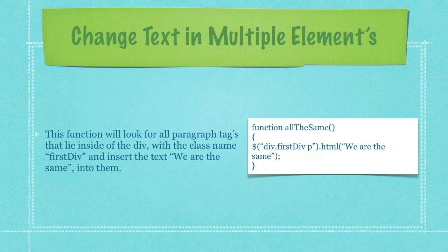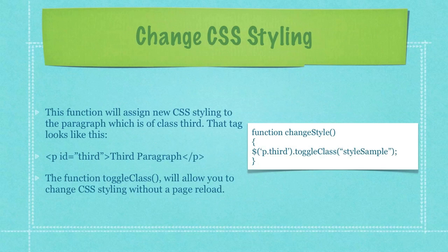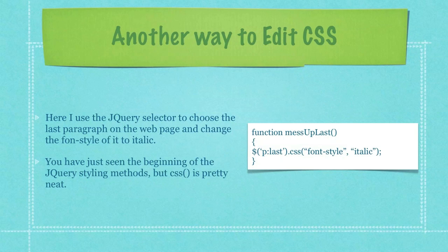This function will assign new CSS styling to the paragraph which is of class 'third', and that tag you can see right here in the second bolded item on the left. The toggleClass function will allow you to change CSS styling without a page reload. Here I use the jQuery selector to choose the last paragraph on the web page and change the font style of it to italic.